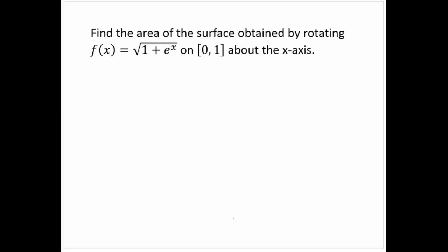Here's another example — this one's a bit tougher. Find the area of the surface obtained by rotating f(x) = √(1 + eˣ) on the interval 0 to 1 about the x-axis. First, let me calculate the derivative. f′(x): that's (1 + eˣ)^(1/2), so f′(x) = (1/2)(1 + eˣ)^(−1/2) times eˣ.